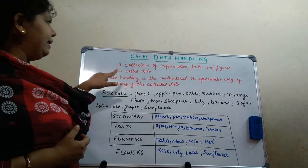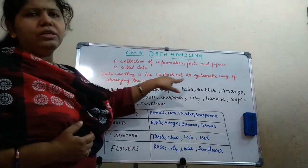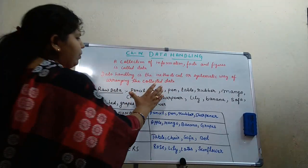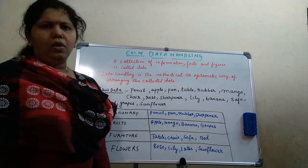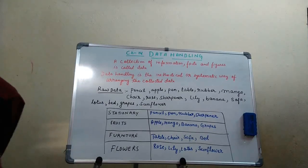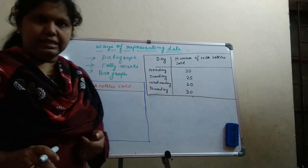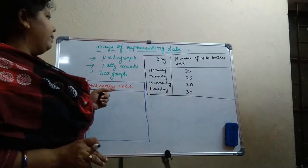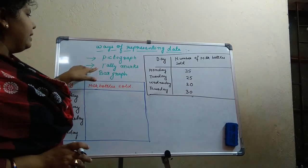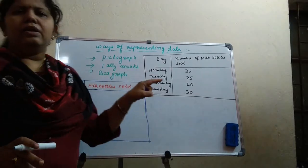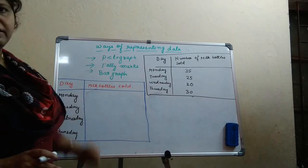And what is data handling? Data handling is the methodical or systematic way of arranging the collected data. So this was our collected data and this is our arranged data. I hope you all have understood the concept. Now let us learn the different ways of representing data. In this chapter, you are going to learn about three different ways: one is pictograph, secondly tally marks, and bar graph. In this class, we will only work on the first two, that is pictograph and tally marks.